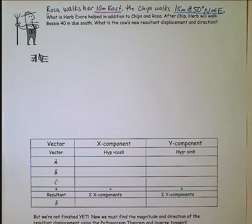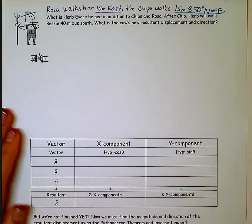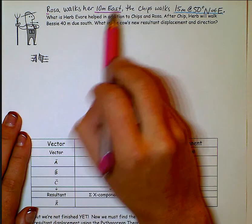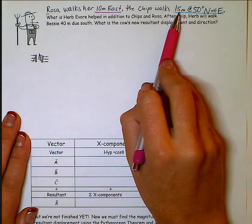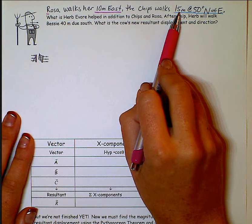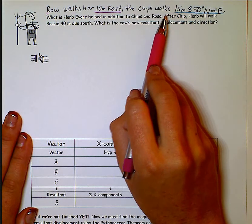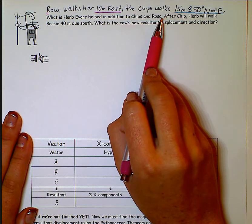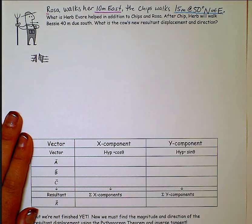It's got Rosa taking the cow 10 meters east, then Chip walks the cow 15 meters at an angle of 50 degrees north of east, and then we're adding a third one. Herb Evore is going to walk Bessie 40 meters south after all that is said and done.